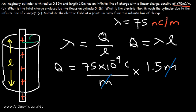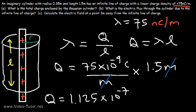The units of meters cancel, and the total charge enclosed by the cylinder is equal to 1.125 times 10 to the minus 7 coulombs. So this is the answer to part A.